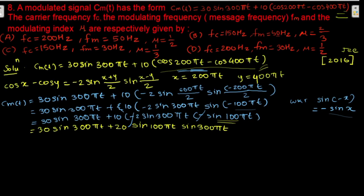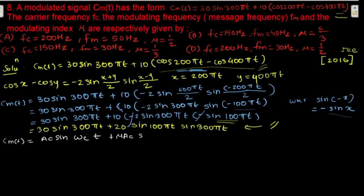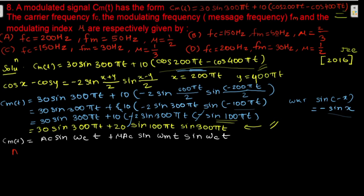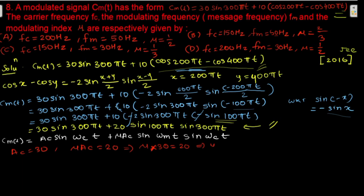Now, the standard AM amplitude equation is: Ac sin(ωc·t) + μ·Ac sin(ωm·t) · sin(ωc·t). Comparing our equation with this standard form, we can see that Ac = 30, and μ·Ac = 20.